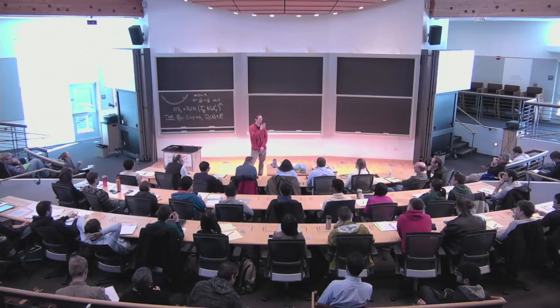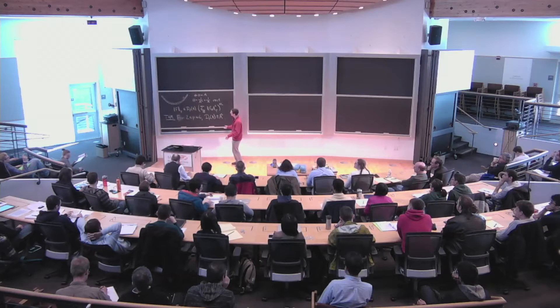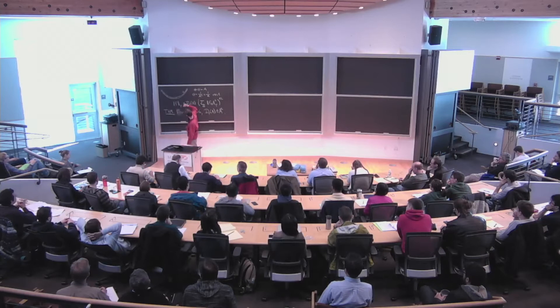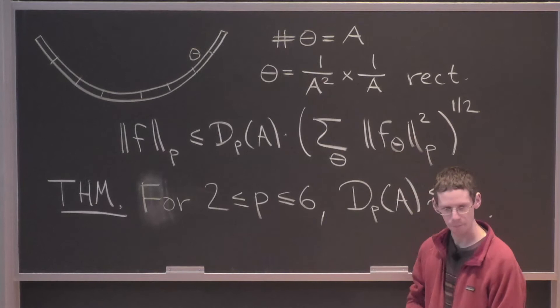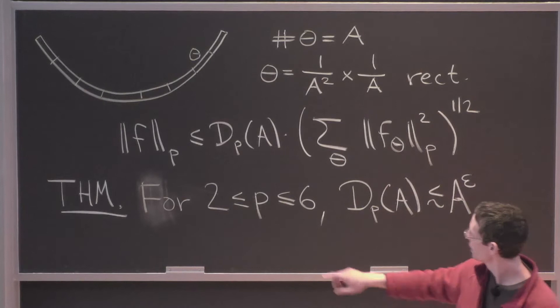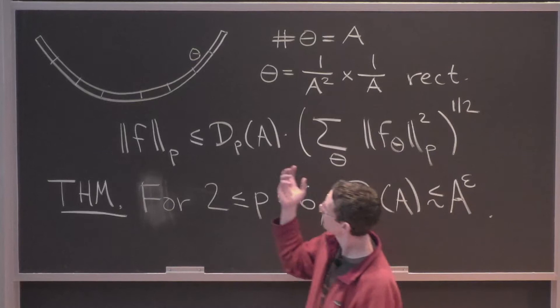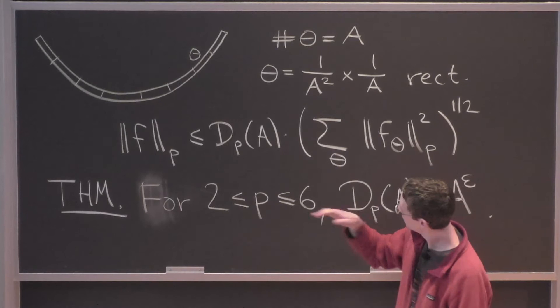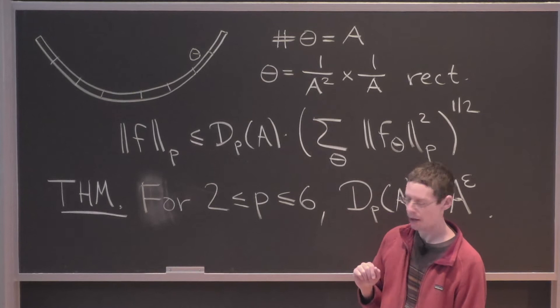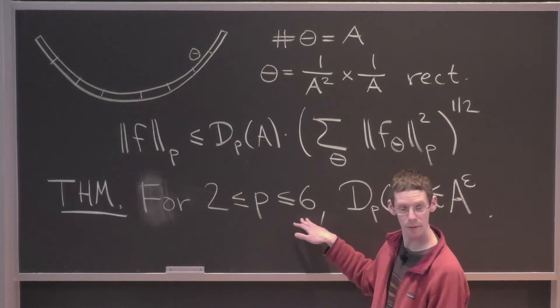Let me quickly remind people what we've been talking about. We're talking about the decoupling problem. We take a slender neighborhood of a parabola and cover it with rectangles called theta. A is the number of rectangles, and each has certain dimensions. We take a function f whose Fourier support is contained in this slender neighborhood of a parabola, break it up as a sum of pieces f_theta, where f_theta is the portion of the Fourier integral coming from theta. We want to understand how the L^p norm of f relates to the L^p norm of the pieces. The decoupling constant d_p(A) is the best constant making this true. The theorem of Bourgain and Demeter is that for this optimal range of p, the decoupling constant is almost one — it grows smaller than A to the epsilon.